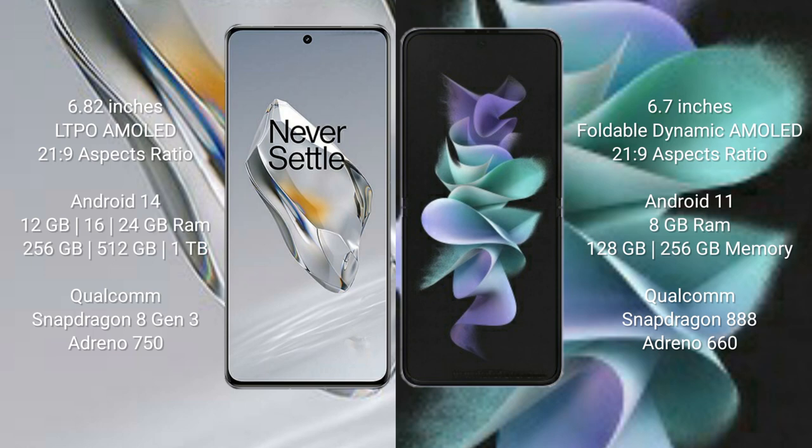The OnePlus 12 comes with 12GB, 16GB, or 24GB of RAM and 256GB, 512GB, or 1TB of internal storage, with a Qualcomm Snapdragon 8 Gen 3 processor and Adreno 750 GPU. The Samsung Galaxy Z Flip 3 comes with 8GB of RAM and 128GB or 256GB of internal storage, with a Qualcomm Snapdragon 888 processor and Adreno 660 GPU.